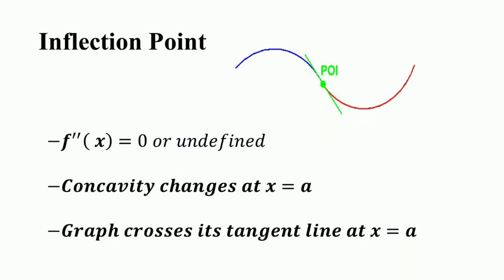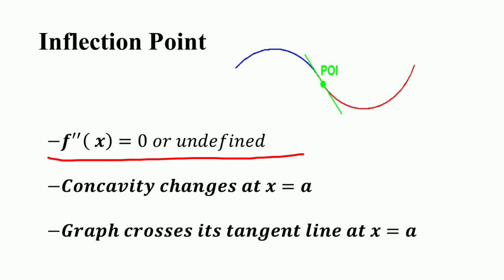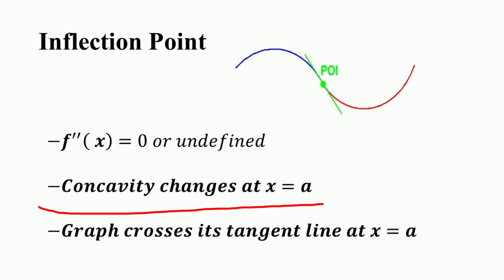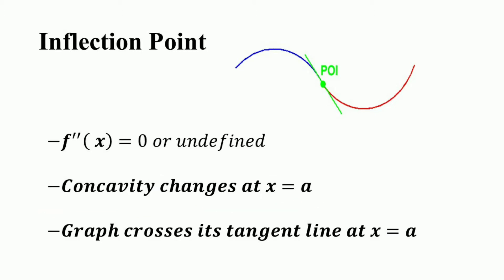In short, for an inflection point at a: the second derivative f''(x) = 0 or is undefined, the convexity changes at x = a, and the graph crosses its tangent line at x = a.